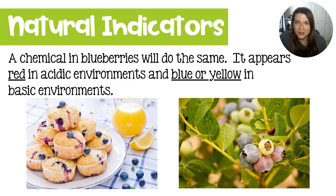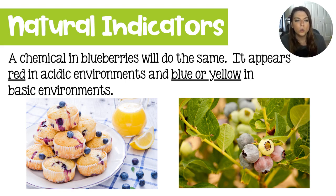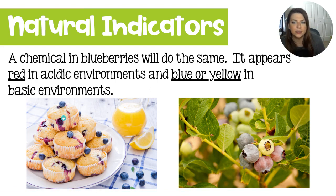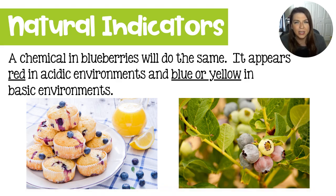Blueberries are also a natural acid-base indicator. There's a specific chemical in blueberries — they are red in more acidic environments and more bluish, yellowish, or greenish in basic environments. You can see that these blueberries kind of have this reddish syrup, which means they're a little bit acidic. Other times blueberries can make a muffin almost a yellowy-greeny color, which would mean it's a little bit more basic.